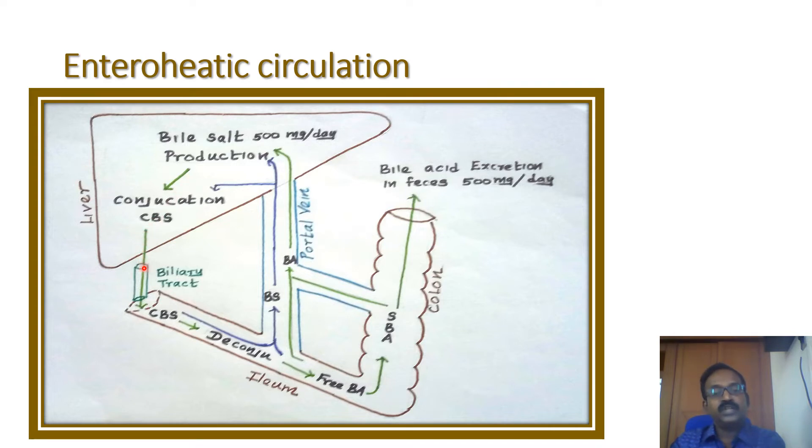Conjugated bile salts enter into the biliary tract and enter into the intestine. From the small intestine, they are recirculated into the liver through the portal system, the portal vein, in the form of conjugated bile salts. Conjugated bile salts are deconjugated as free bile acids.